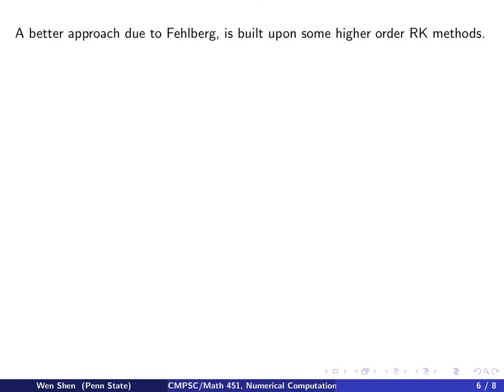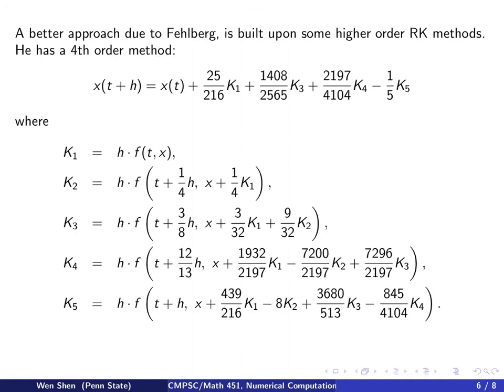There is a better approach due to Fehlberg, based on a high order Runge-Kutta method. He has a fourth order Runge-Kutta method listed here. To compute the next step is the previous step plus the constants k1, k3, k4, and k5 combined in this specific way with those weights, where the k's are computed in this specific way. It's carefully arranged to achieve the desired order, and one can show that this method is actually fourth order.